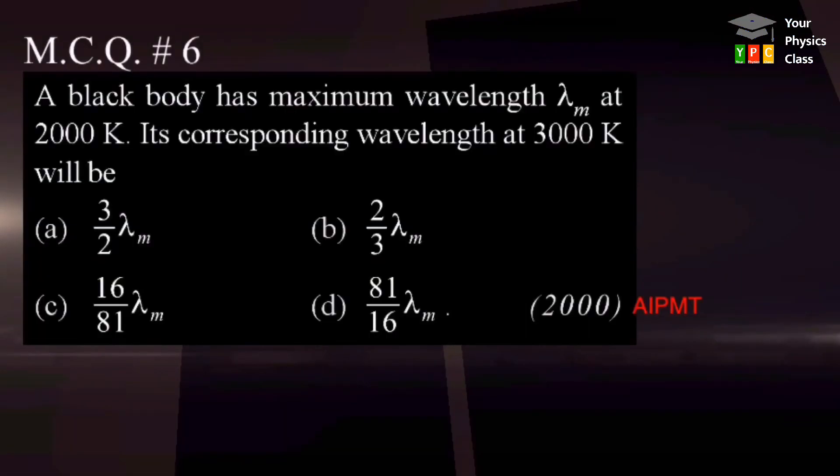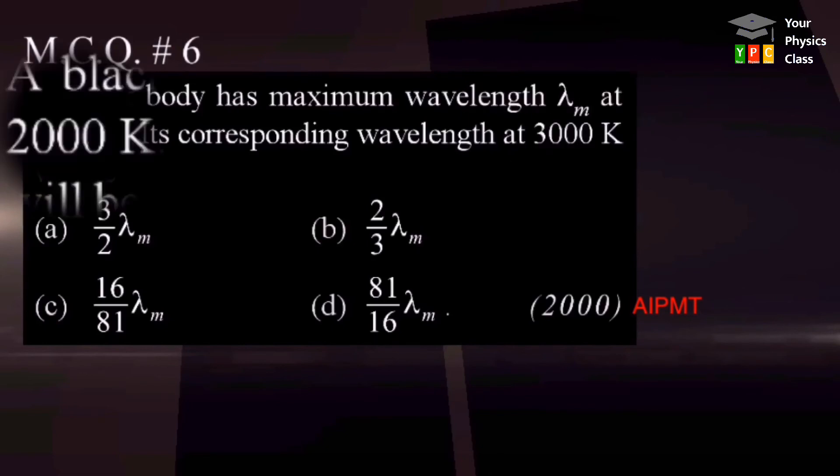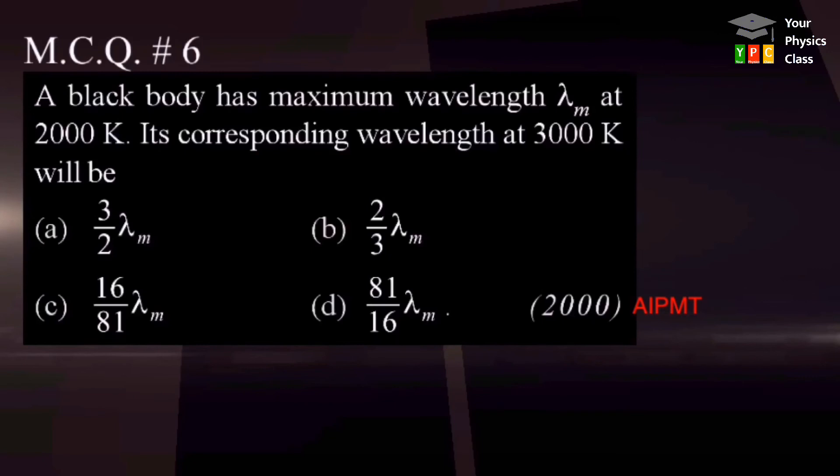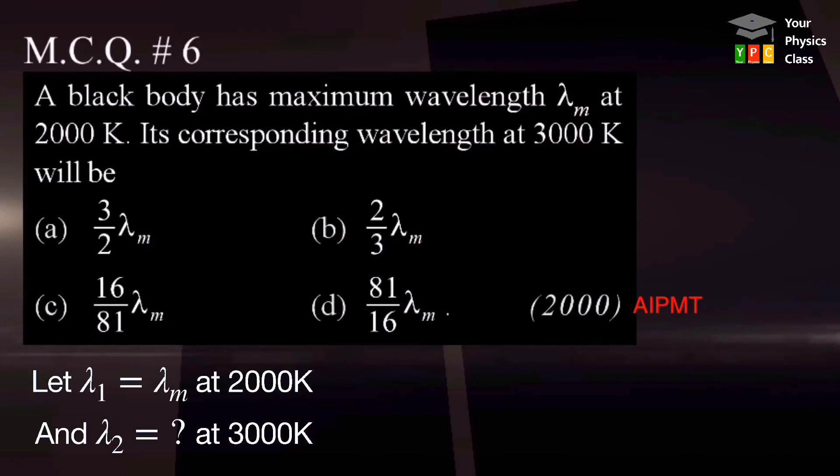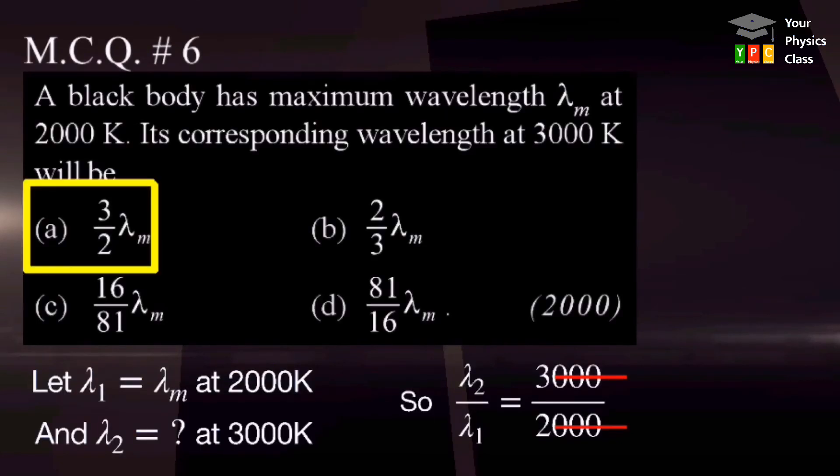The black body has maximum wavelength lambda m at 2000 Kelvin. Its corresponding wavelength at 3000 Kelvin will be: Here, we have to compare two cases. In the first case, lambda is given as lambda m and temperature is 2000 Kelvin, and in the second case, lambda we have to calculate at 3000 Kelvin. If you compare these two conditions as per Wien's law, we get lambda 2 by lambda 1 equals 3000 upon 2000. Cancelling zeros, we come to the conclusion that option A is the correct answer.